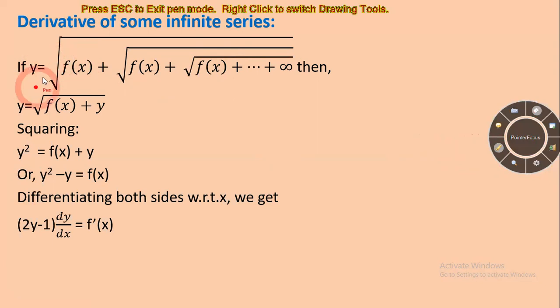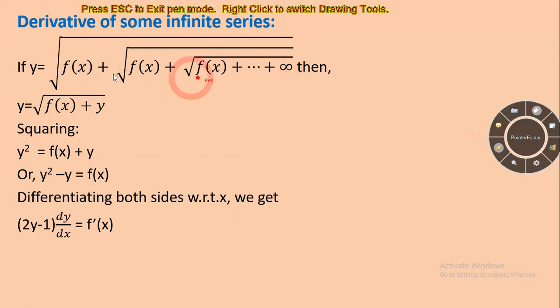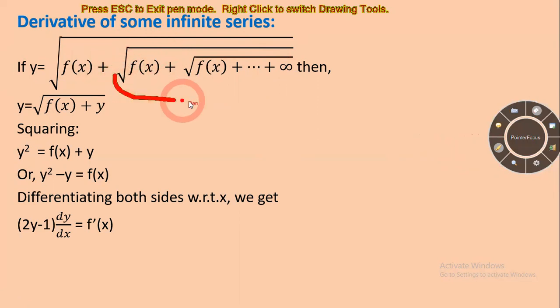Since y equals the infinite series that repeats, the repeating part is equal to y itself. So the substitution y equal to square root of f(x) plus y is valid because it repeats the same function up to infinity.